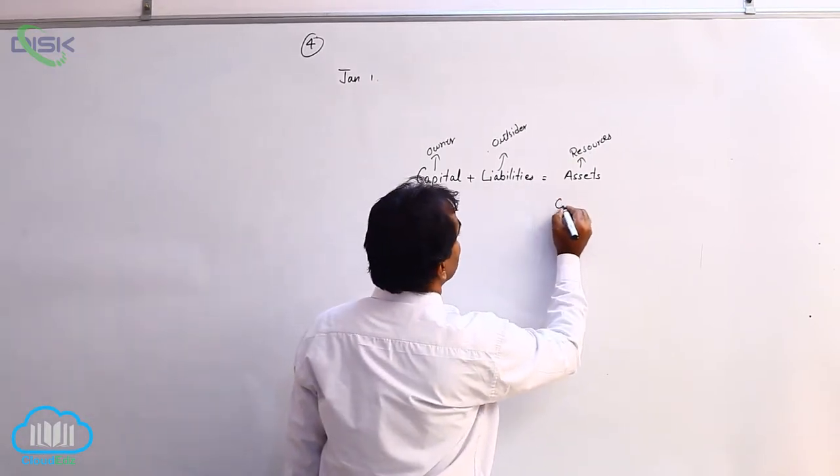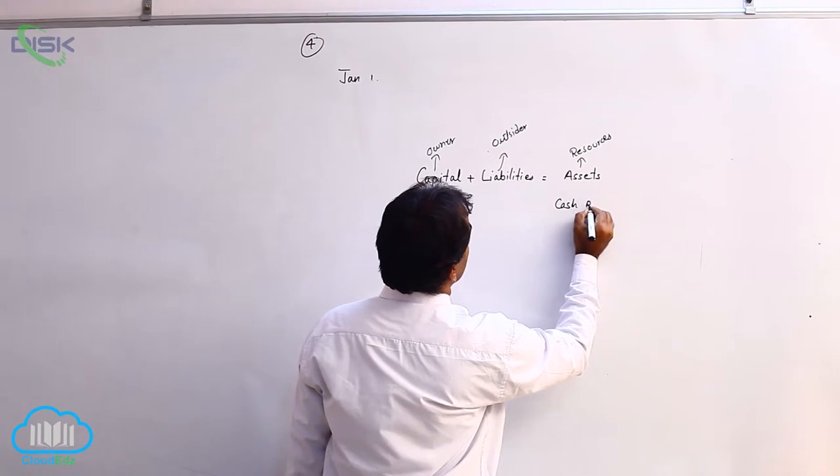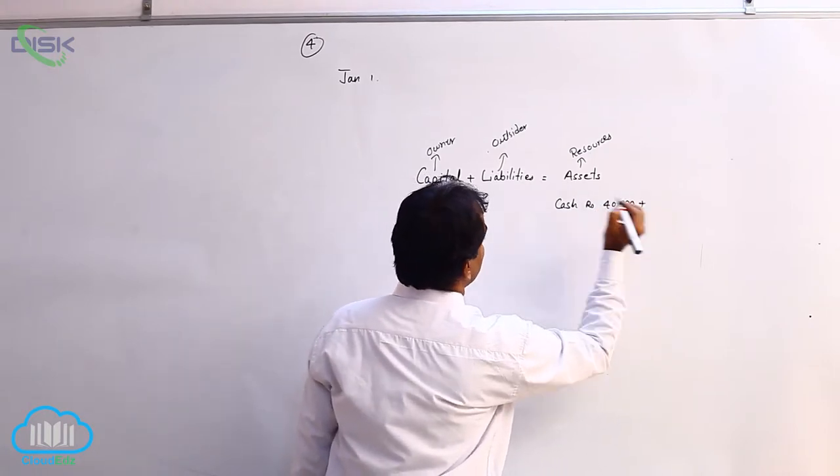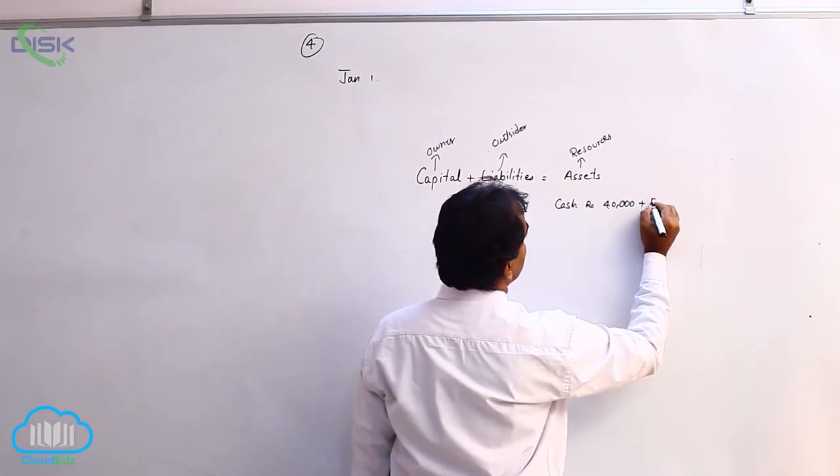So one of the resources or assets here is cash which is 40,000 and also it is stated he has furniture.